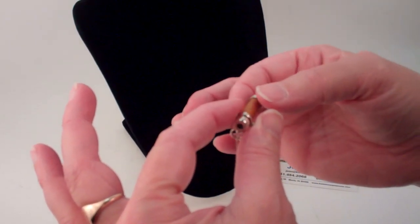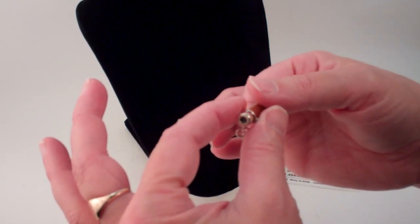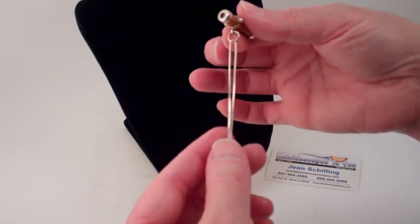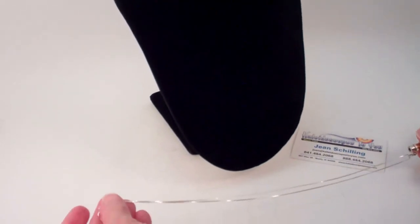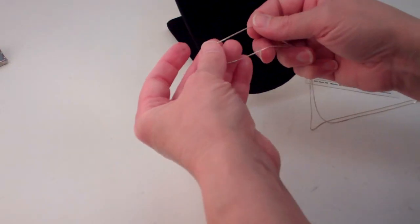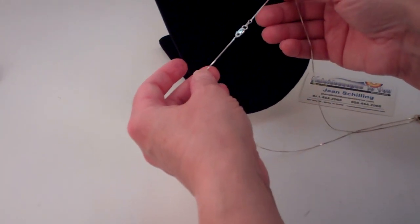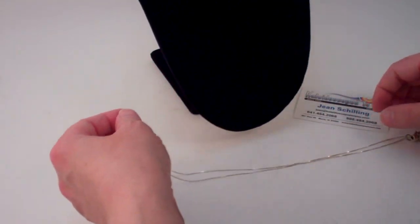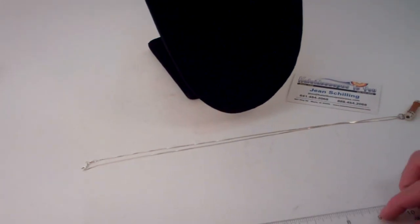The chain that it comes with is a delicate sterling silver box chain and it has a wonderful lobster claw clasp that's very secure. The length of the chain is 24 inches.